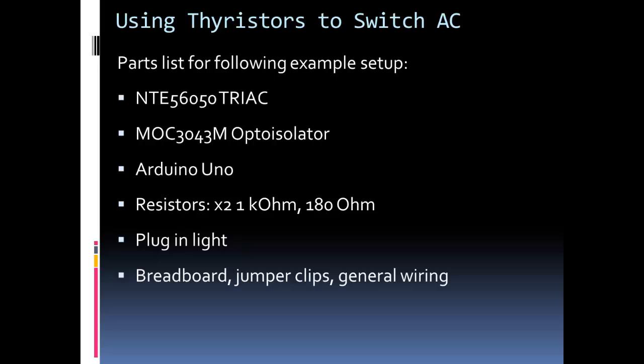Here's the parts list for the example I'm going to do and you can see the triac at the top. It's just a general purpose triac that I'm using. Also, second, you see an opto isolator. An opto isolator is a device that's going to keep our digital DC isolated, electrically isolated from our AC. Then I'm just going to use an Arduino Uno to control the triac through the opto isolator. I have a couple of resistors, a basic light, and then a breadboard and some jumper cables and general wiring.